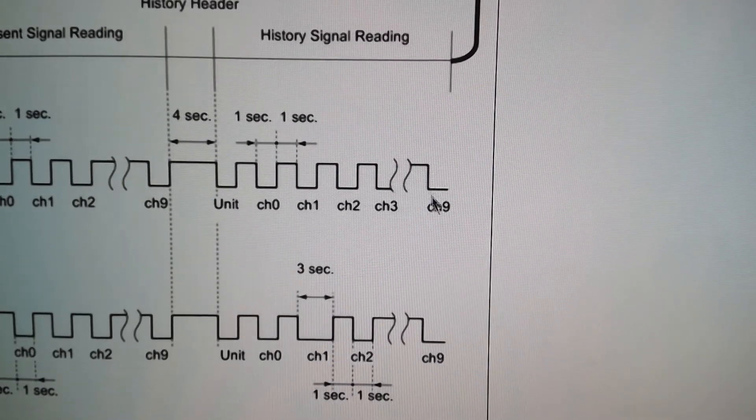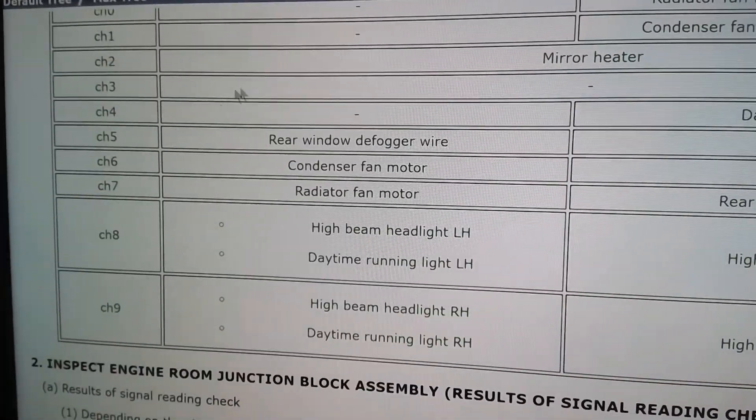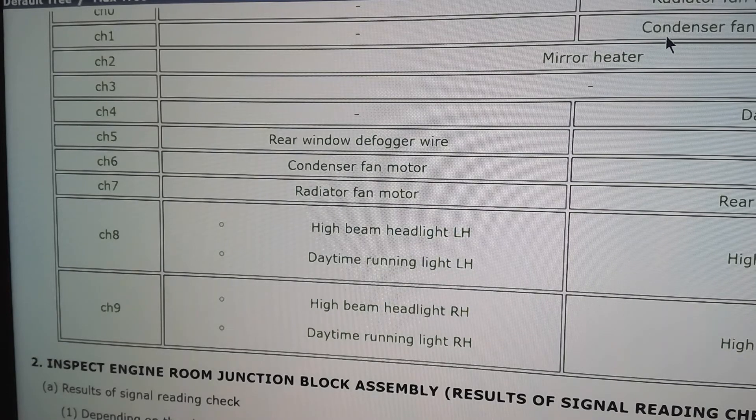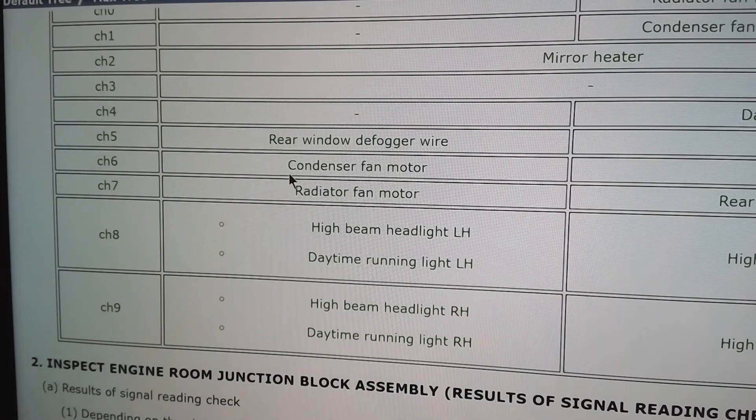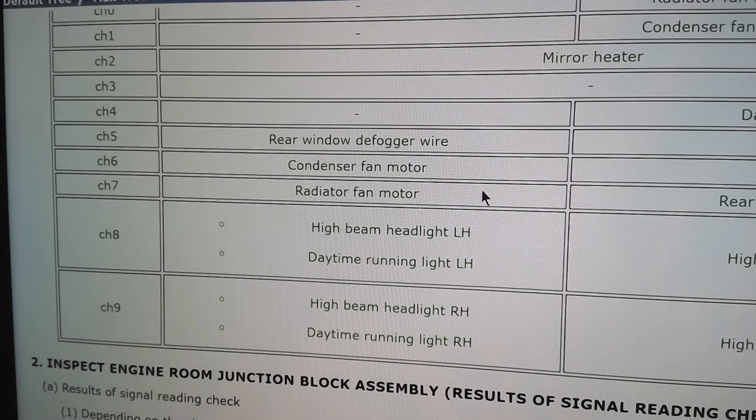Also, the channels will show you the different things that it controls. This would be for a 2GR, but we have a 2AR here. Channel six is the condenser fan motor. Channel seven, you might remember that this system is a series-parallel fan system.